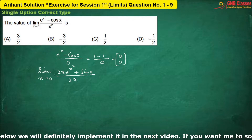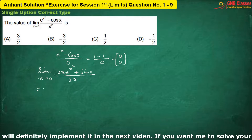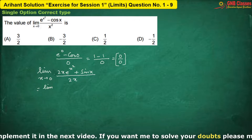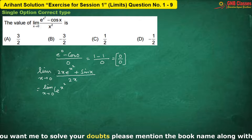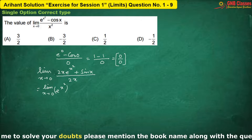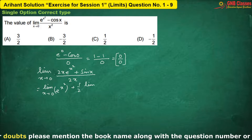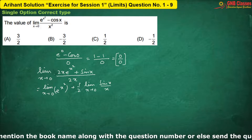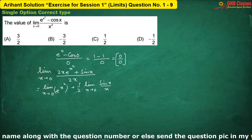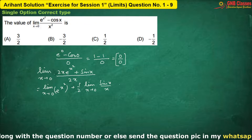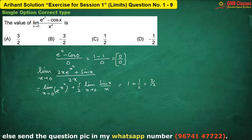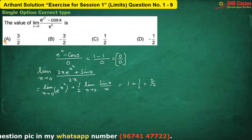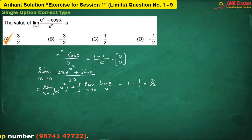Here I am applying the general method — I am simply separating the two limits. You can apply L'Hôpital's rule also; in that case you will get the same answer. Now if I put x equals to 0, we are getting the value of the limit. Hence, option A is correct. Let us move for the next problem.